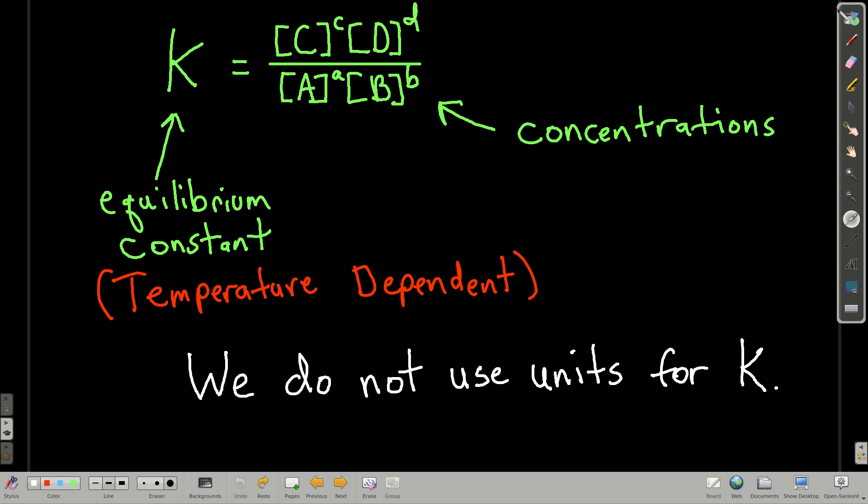Sometimes you'll see the K equilibrium constant expression written like this, with a C down here, to stand for concentrations, because we'll see in the next module, we can do it in terms of pressures also. But we're just going to write K, call it good.